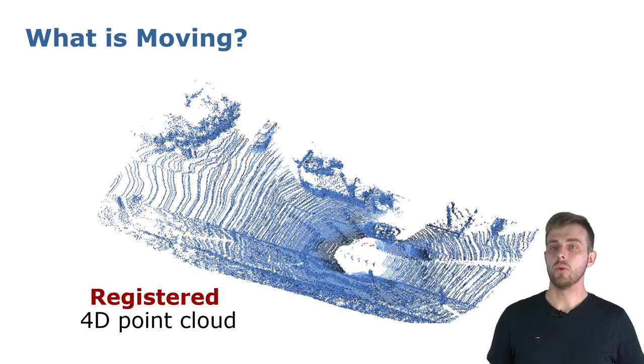If you now look at this 4D point cloud, it is easier to spot the moving objects. For some objects, like the cyclist, one can even clearly see the color gradient.